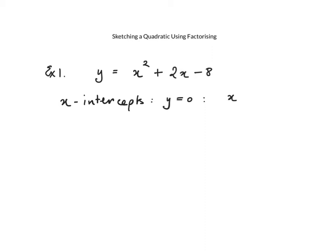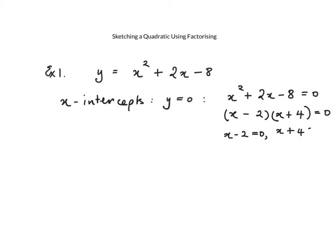So x squared plus 2x minus 8 equals 0. This was the sort of quadratic function that we were factorising and solving last week. So we factorise it. x and x, with factors 4 and 2, plus and minus. What we did next was to let each factor equal 0, and that gives us x equals 2 and x equals minus 4.